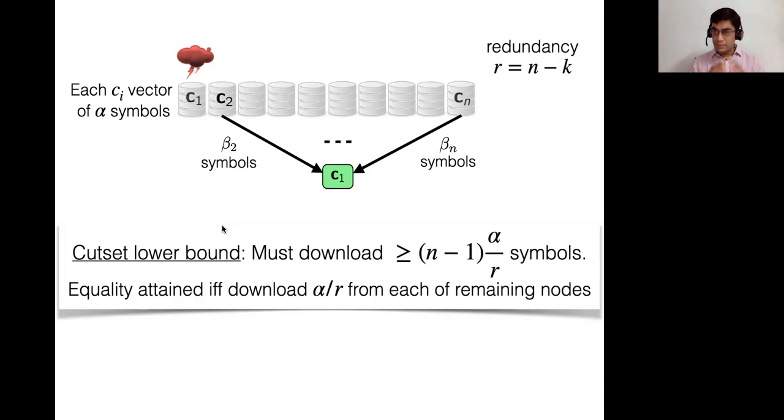And what might you be able to do? So let's say the redundancy of the coded system is r, which is n minus k, because you have k message symbols and n coded symbols. And let's say each coded symbol is alpha symbols long. There is a relatively simple argument you can show using the MDS property of the code that in order to recover C1, you need to download a total information. Note that C1 is just alpha symbols, but to recover it, you need to actually download more than alpha symbols and how much more you need to download n minus one by r factor more symbols in order to recover alpha. That's the least you can achieve.